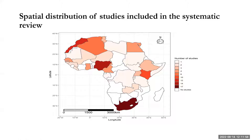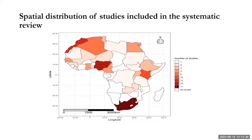This map shows the spatial distribution of papers included in the review. There is vast geographical variation in the distribution of model papers. The majority came from South Africa and Morocco in the north, while Kenya only had six papers included. This illustrates very limited modeling capacity or published literature to address issues related to the pandemic across the African continent.